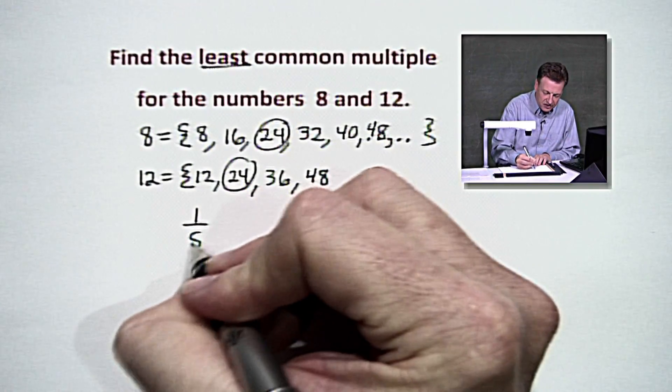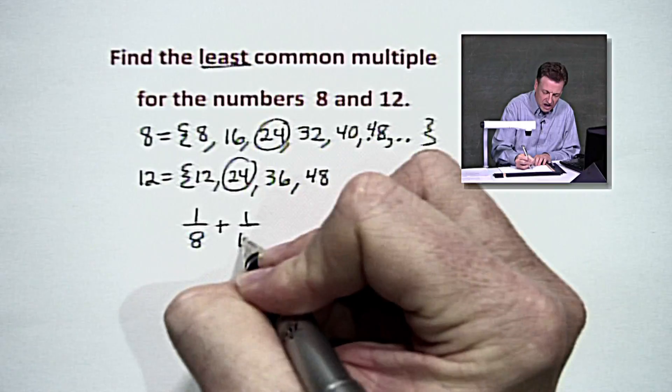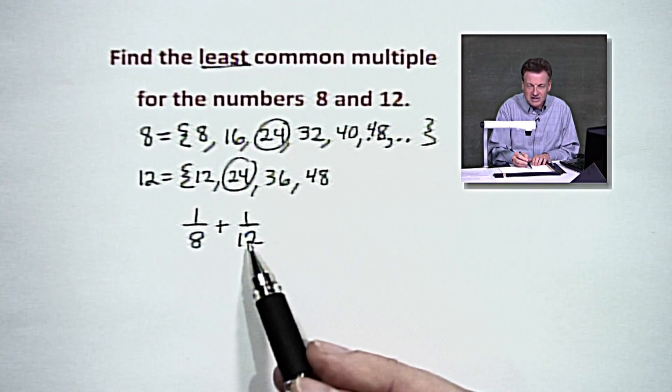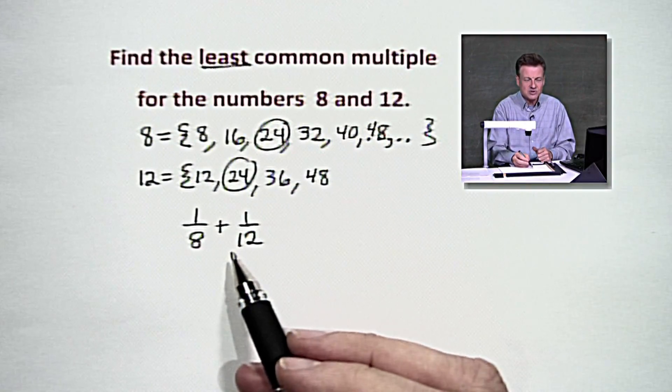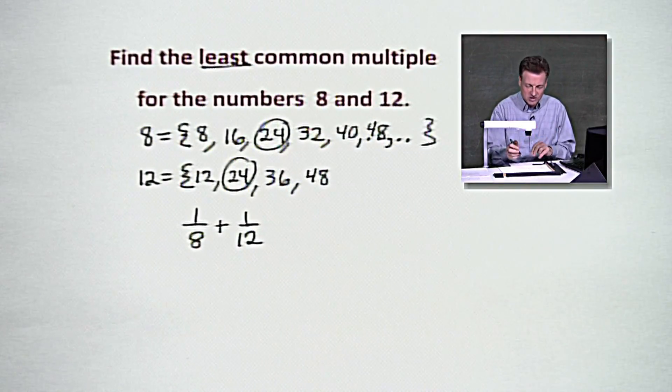If you were to say 1/8 plus 1/12, that least common denominator is a least common multiple. Those two numbers, from those two denominators. So that's where we use this. And so, again, if we were to go on, we'll go one more step with it.